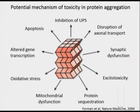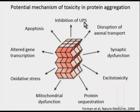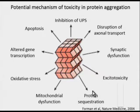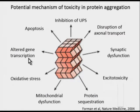To summarize the potential mechanisms of toxicity in protein aggregation disorders: accumulation of beta-pleated sheets causes inhibition of the ubiquitin proteasome system, can disrupt axonal transport, result in synaptic dysfunction, increase excitotoxicity, cause protein sequestration making proteins unavailable for other cell functions, result in mitochondrial dysfunction and further oxidative stress, and—with the example of TDP43—may affect gene transcription, ultimately resulting in apoptosis and cell loss.